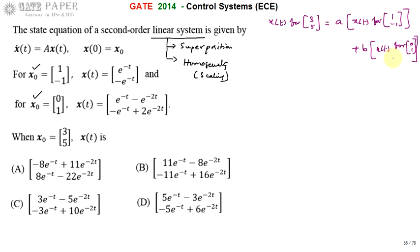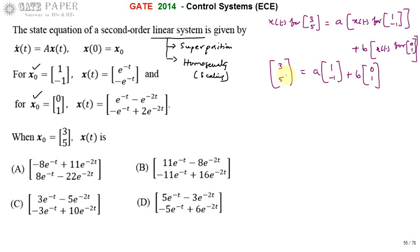So [3, 5] as the input is written using superposition and homogeneity as a times [1, -1] plus b times [0, 1]. The total response is the sum of individual responses, and we write [3, 5] in terms of these two known inputs with coefficients a and b.